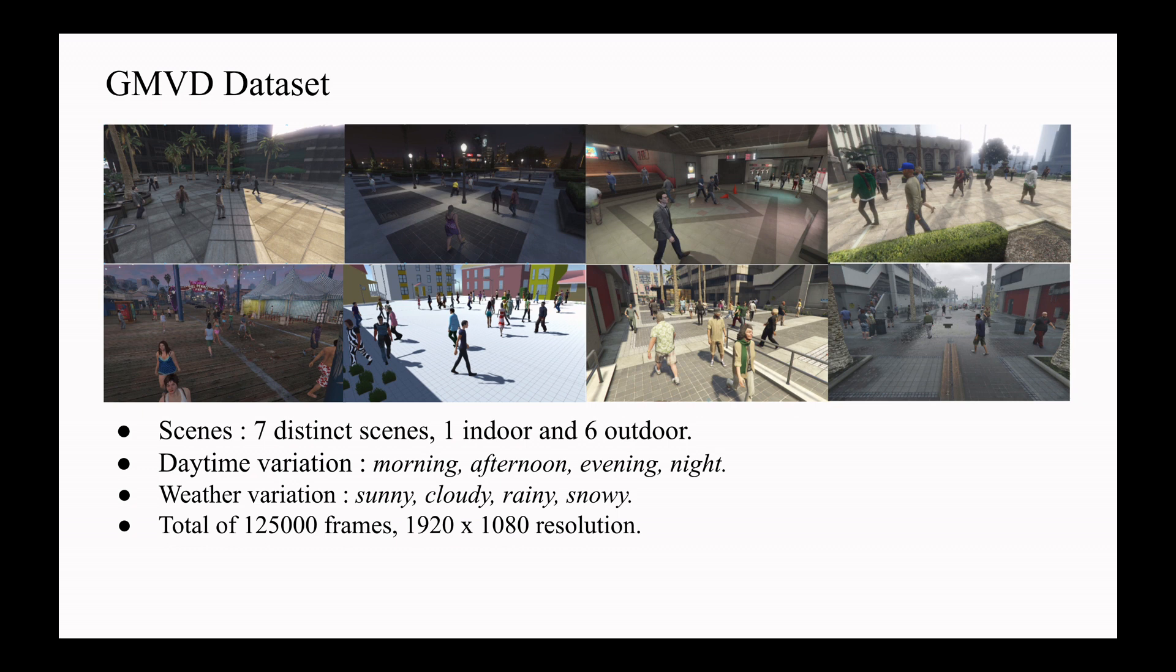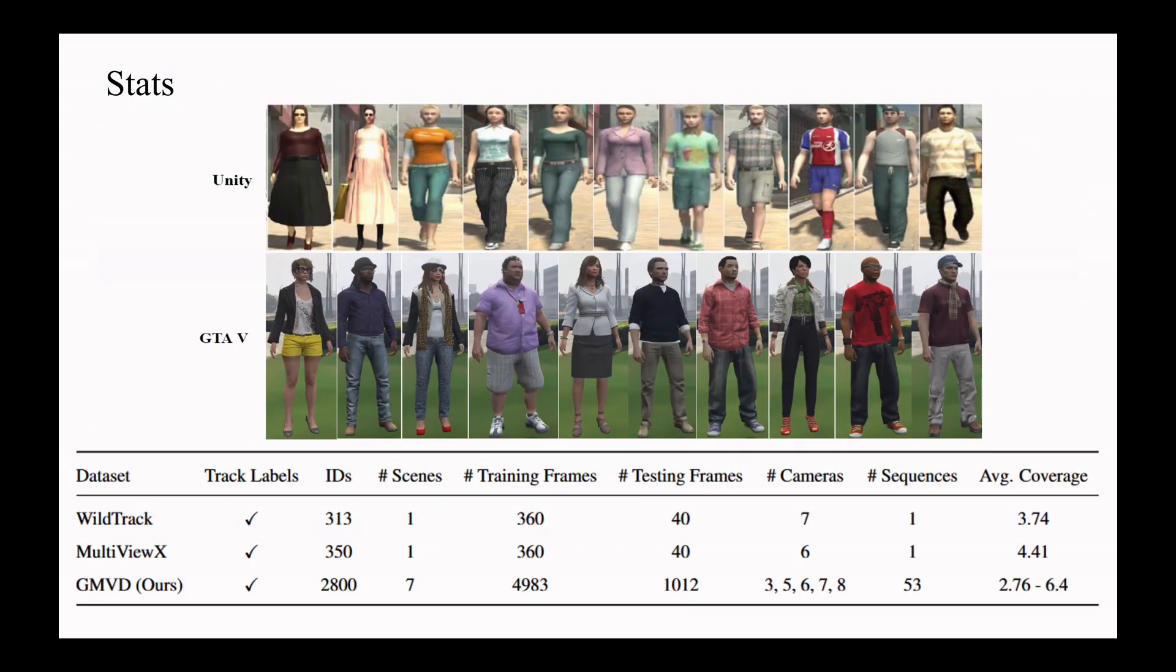GMVD dataset has seven distinct scenes, one indoor and six outdoor. Each scene has multiple random sequences which include daytime variation and weather variation. There are a total of 125,000 frames of full HD resolution. The dataset also contains track labels for multi-view tracking. It has a total of 2,800 person identities combined from GTA and Unity. Every scene has different numbers of cameras ranging from 3 to 8. There are total of 53 sequences and the average coverage, that is the average number of cameras observing each location on the top view map, is ranging from 2.76 to 6.4.